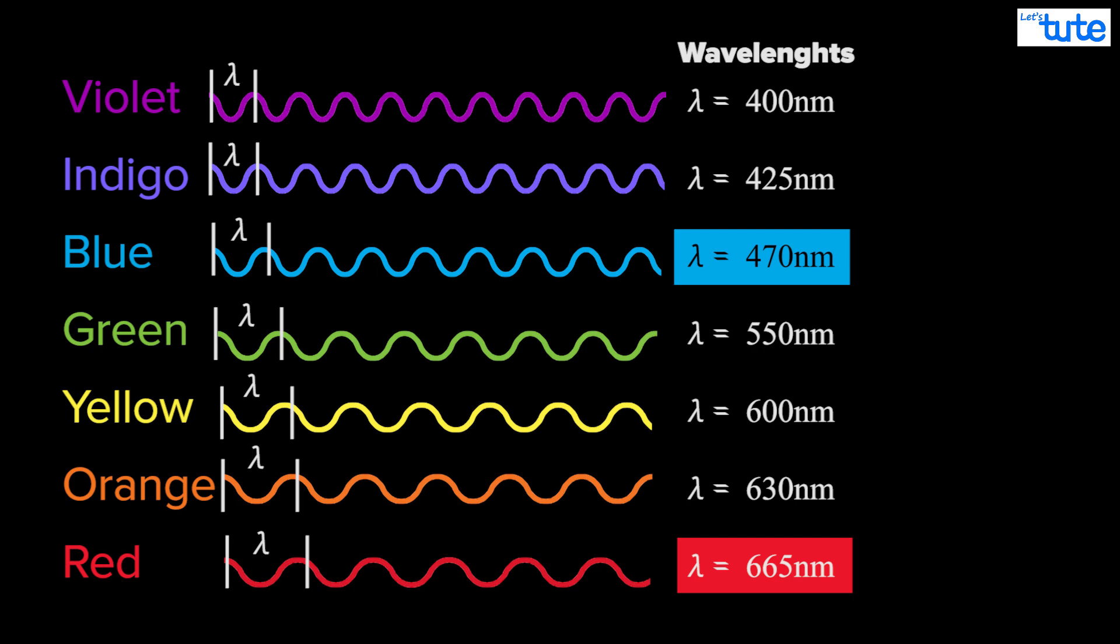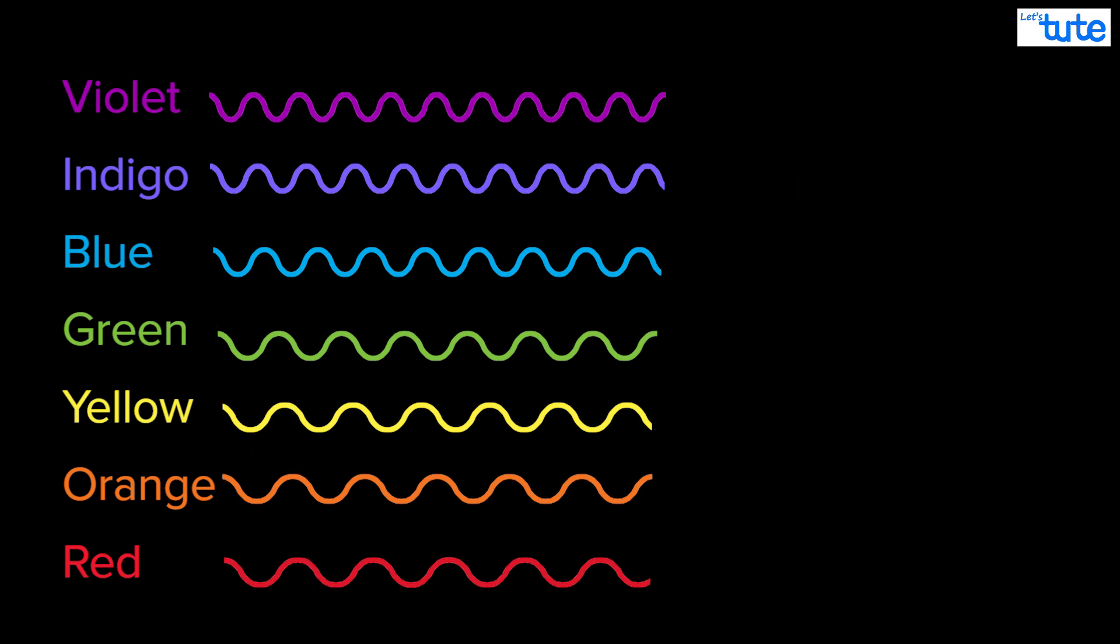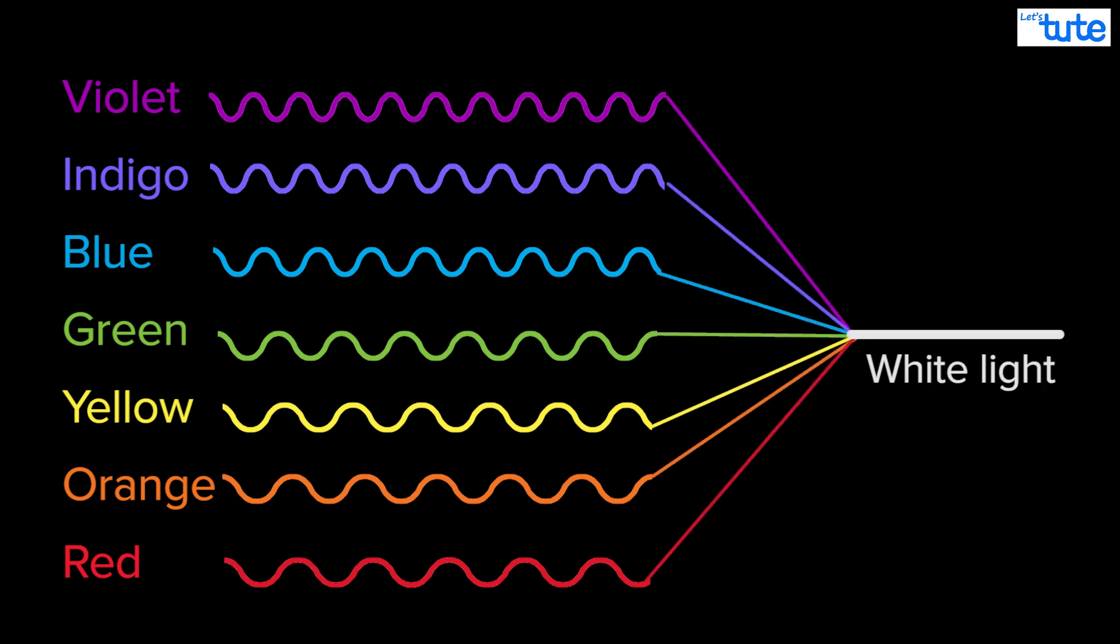So red light has a wavelength and blue light has a different wavelength. Importantly, blue light has a shorter wavelength than red light. And all of the colors of the rainbow when mixed together make white light. Now that we know this, we can understand Rayleigh scattering.